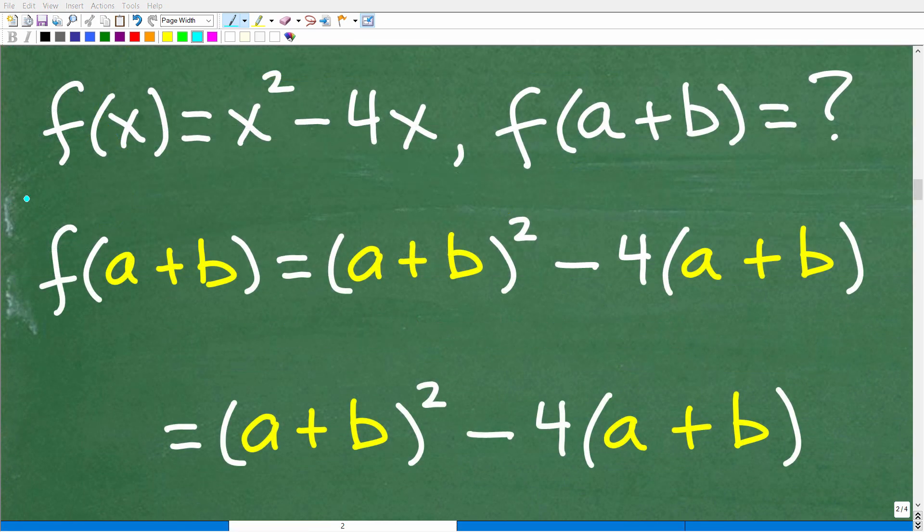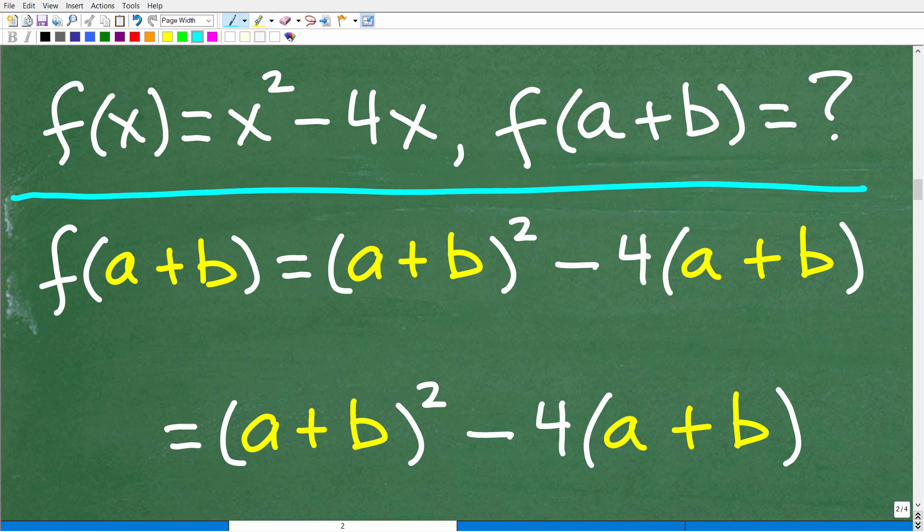Okay, so now that we understand what it means to evaluate a function, we can evaluate this function, f(x) = x² - 4x, with f(a + b). So that means we need to replace all these x's with a + b. All right, so f(a + b) is going to be equal to (a + b)². Again, we're replacing all these x's with a + b. So that's (a + b)² - 4 times (a + b).